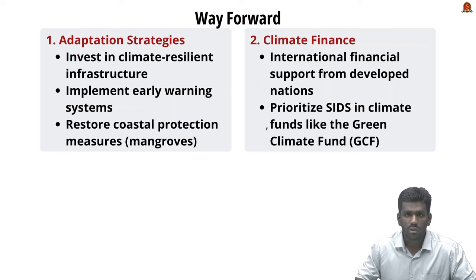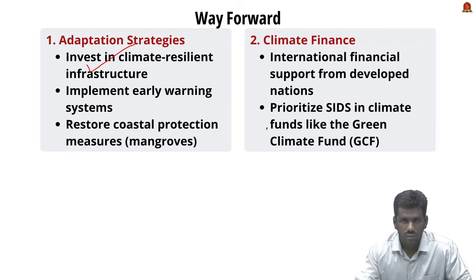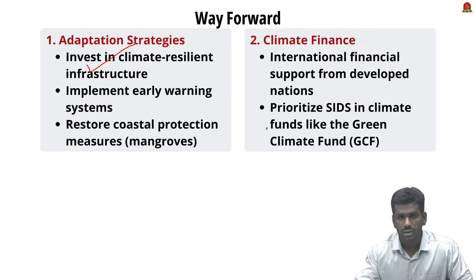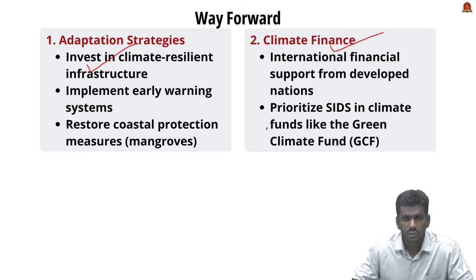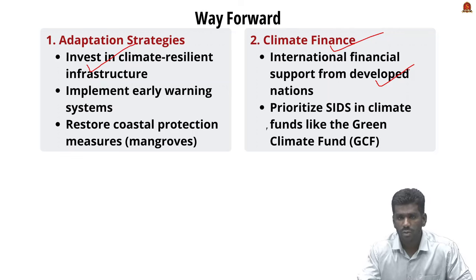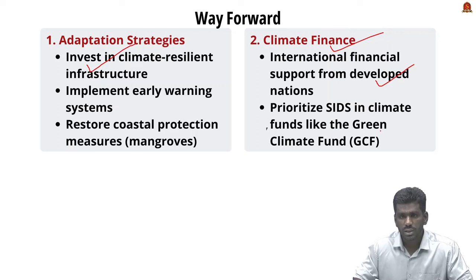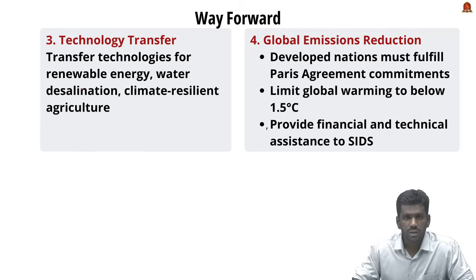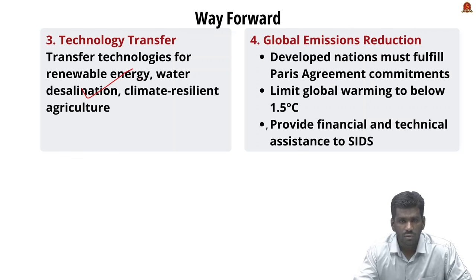As a way forward, small island developing states must invest in climate-resilient infrastructure, early warning systems, and coastal protection measures — for example, mangrove restoration and coral reef restoration projects. These adaptation strategies will help mitigate the effects of climate change. For climate finance, international financial support from developed nations is critical; climate funds like the Green Climate Fund prioritize small island developing states for adaptation and mitigation efforts. Technology transfer — including renewable energy, water desalination, and climate-resilient agriculture — can enhance their adaptive capacity.